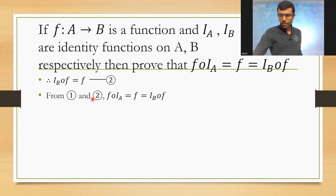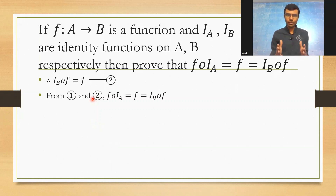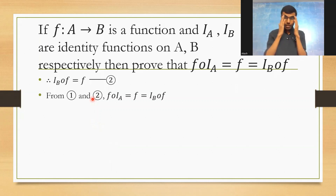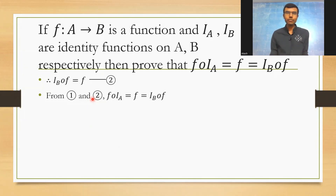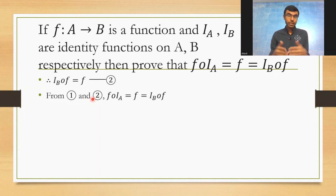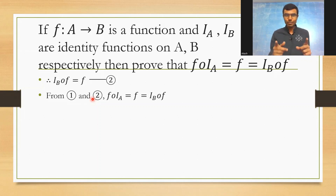From Part 1 and Part 2, therefore f∘iₐ = f = i_b∘f. That's it — the number of steps are short but the explanation is detailed. I hope you understood this theorem. I've made other theorems related to functions as well; I'll put the link to the playlist in the description. If you liked this video, please hit the like button, and if this is your first time on my channel, please subscribe. Thank you!